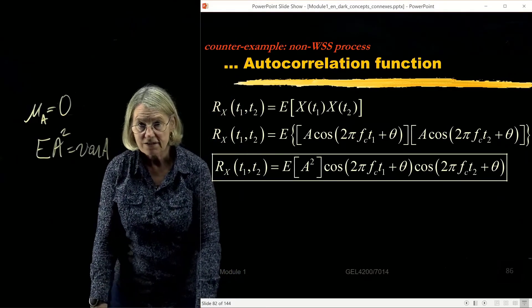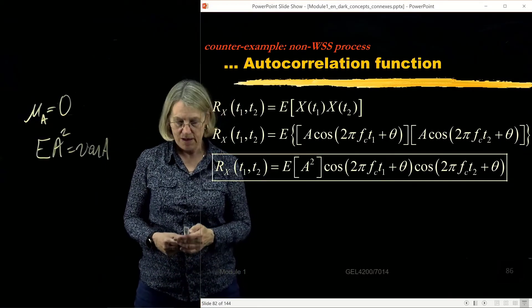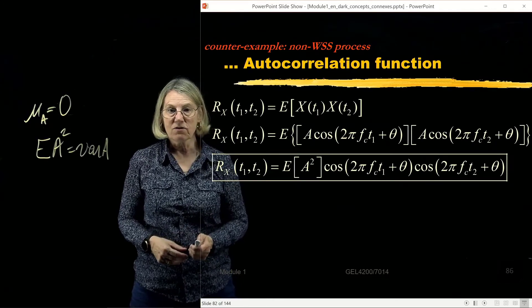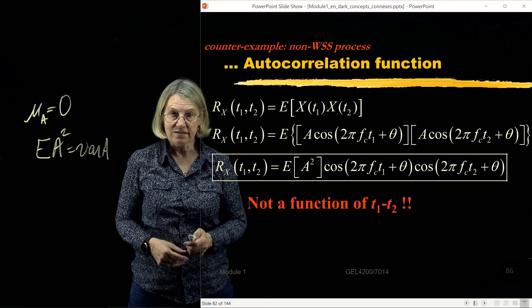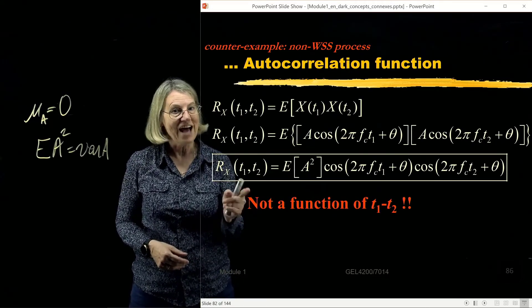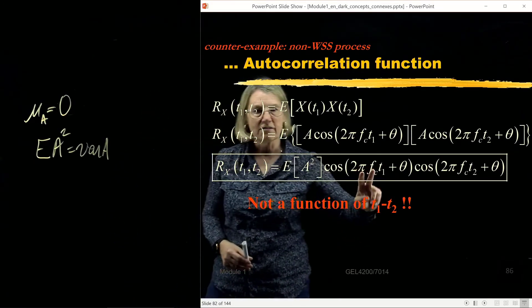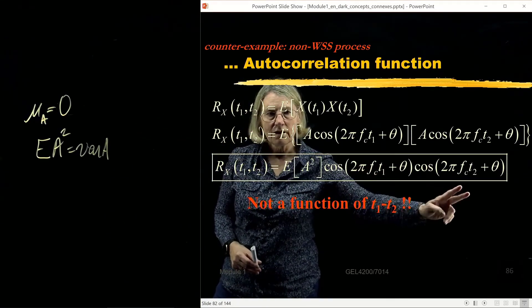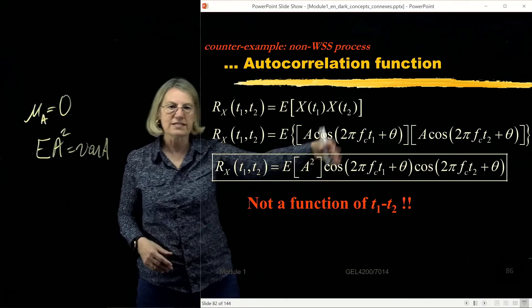Right? Variance is always non-zero. This is always non-zero. And since it's always non-zero, that means that in this case, it really is not a function of the difference because it's a product of cosine of t1 times t2.